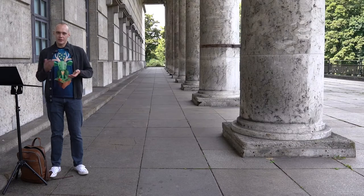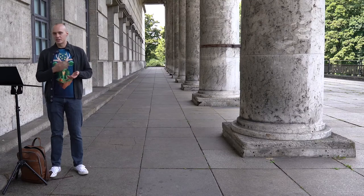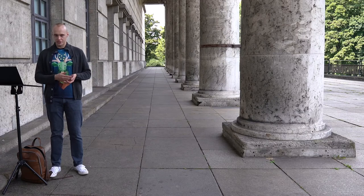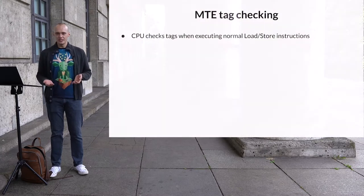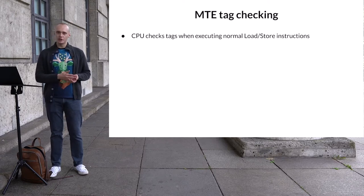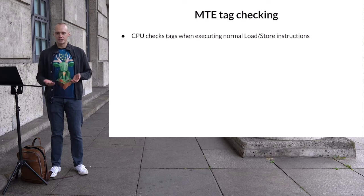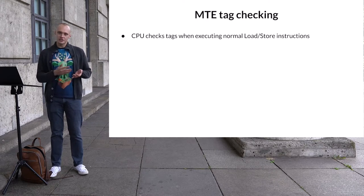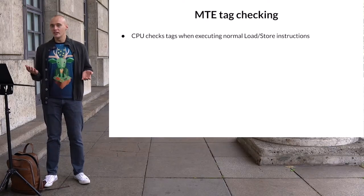The thing that binds memory and pointer tags together is the tag checks performed by the CPU. With MTE, whenever the CPU executes a load or store instruction, it will internally check that the pointer tag matches the memory tag. And if the tags are different, it will generate an exception.